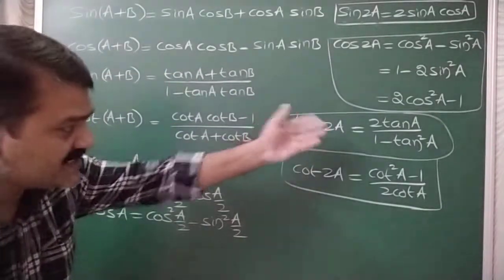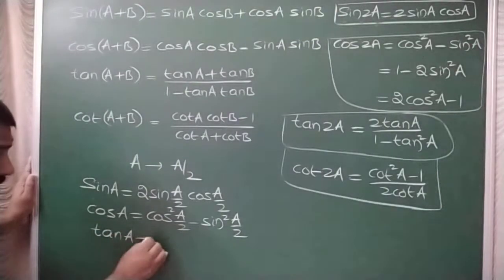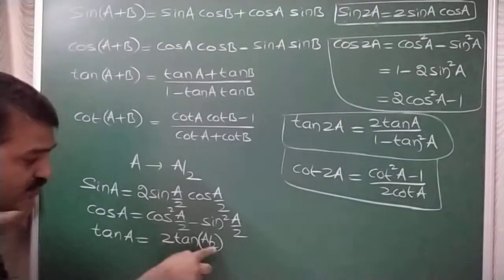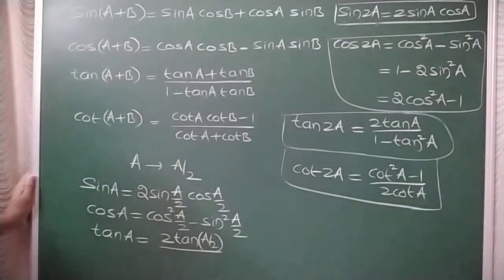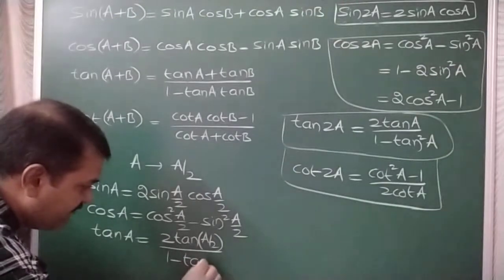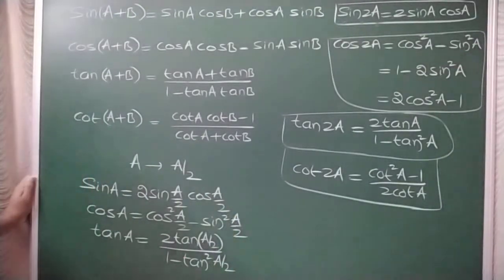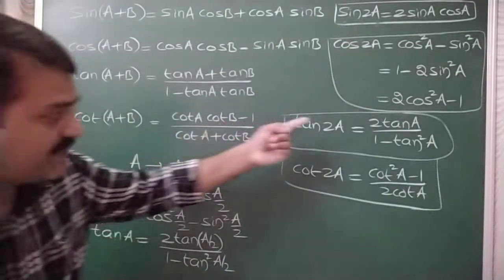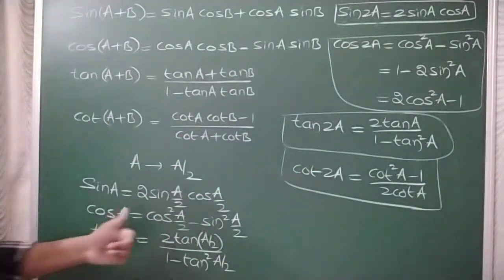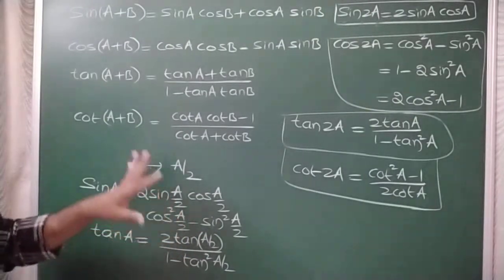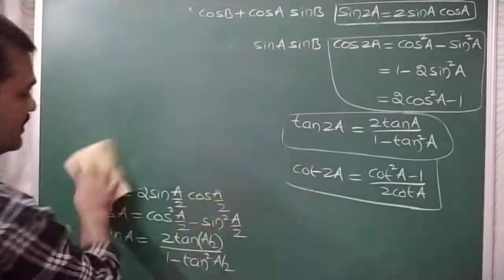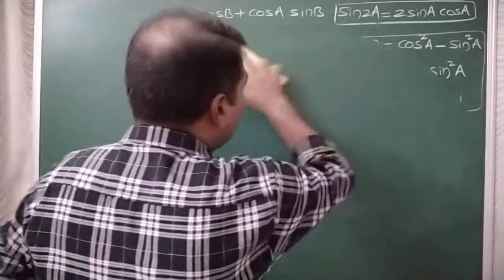Replacing A with A/2 in the tan2A formula gives tanA = 2tan(A/2)/(1 − tan²(A/2)). Note that the 2 in the numerator cannot cancel with the 2 in the denominator since tan(A/2) is the argument. This is the submultiple formula for tanA. These complete the submultiple formulas corresponding to the 2A trigonometric ratios.